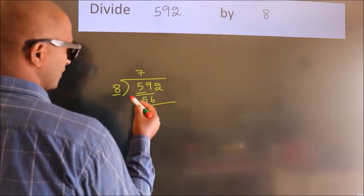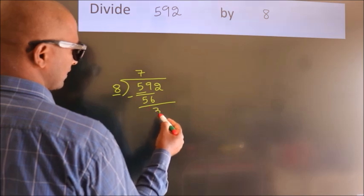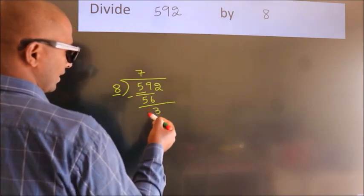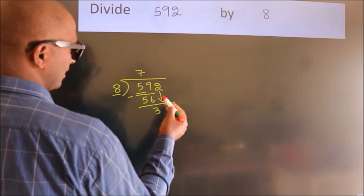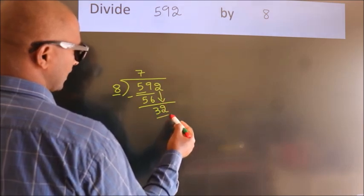Now we should subtract, and we get 3. After this, bring down the beside number. So 2 down, and we have 32.